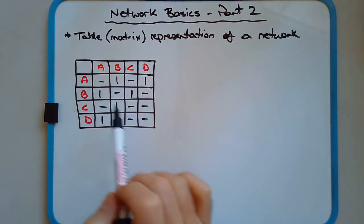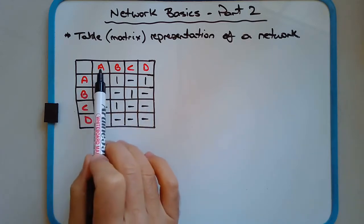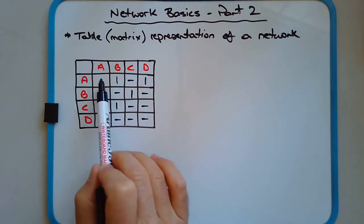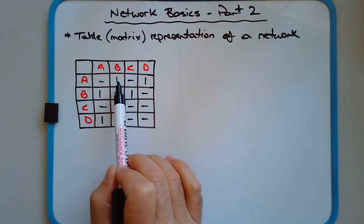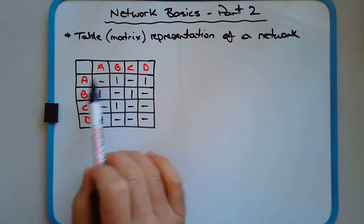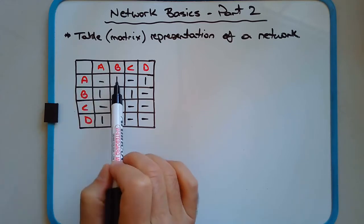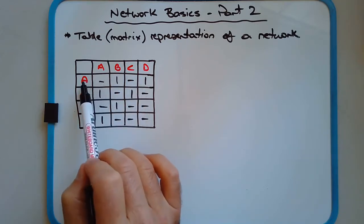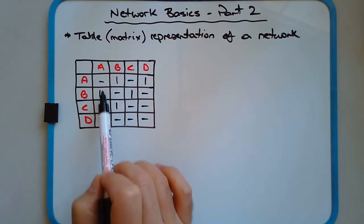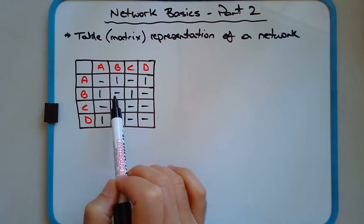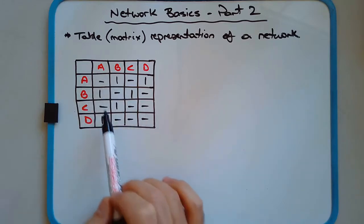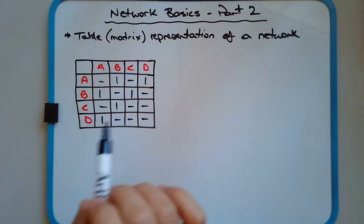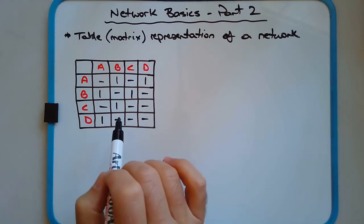Here's an example. The top row and left-hand column show the vertices labeled. Anywhere in the table that shows a one means there's a connection between those two vertices. For example, between A and B there's a one, meaning there's a link. This is not a directed network — the connection from A to B is the same as from B to A, so it's symmetrical across the diagonal. This is an undirected, unweighted network.